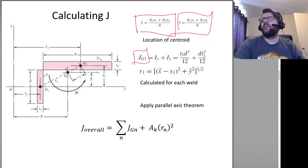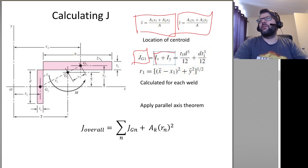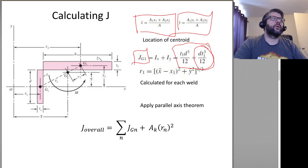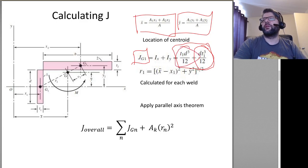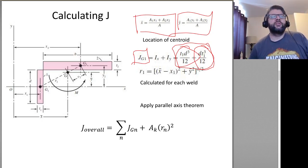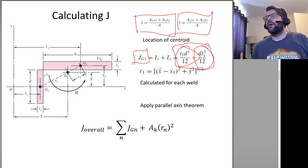Our J values — for each weld we need to calculate their individual J's, which is just the Ix and Iy combined. Typically speaking, when we've got a term that includes the thickness squared, we usually omit that because it's going to be so much smaller than the terms that have just the one times thickness — because the weld thickness is generally going to be a lot smaller than the length of the weld. If you have particularly short welds, you may want to revisit that assumption.